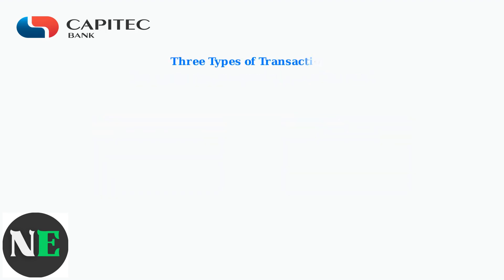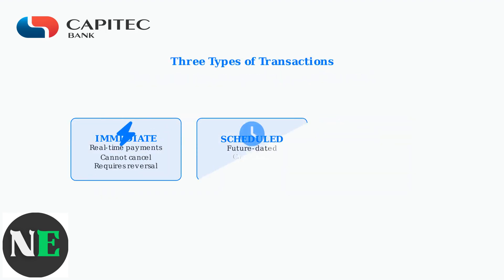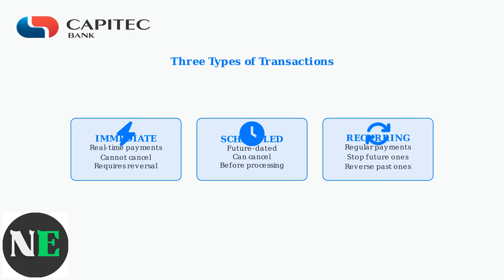There are three types of transactions to consider. Immediate payments cannot be cancelled once confirmed and require a reversal process. Scheduled or future-dated payments can be cancelled before their processing date. For recurring payments, you can stop future occurrences but need a reversal for past payments.